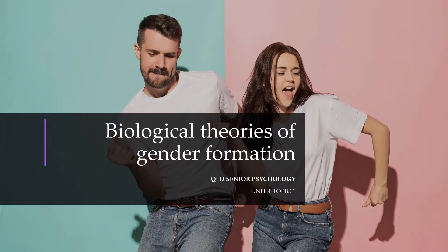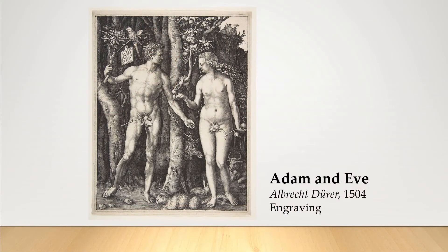This is Adam and Eve — well, not these guys, these guys. It's an engraving by German Renaissance artist Dürer in the early 16th century, currently housed in the Metropolitan Museum of Art. Dürer was fascinated by perspectives and human proportions, and this work was one of his experiments.